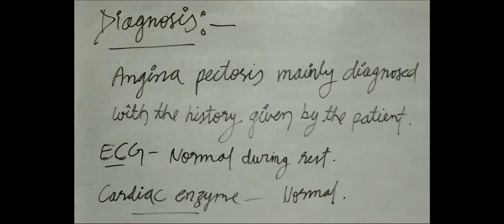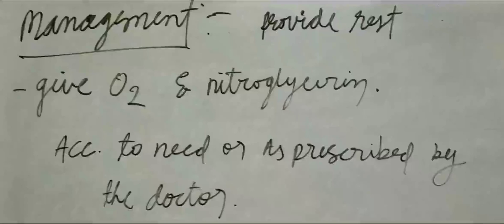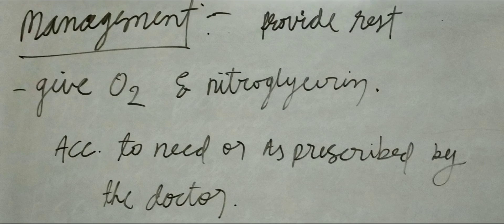Diagnosis: Angina Pectoris is mainly diagnosed with the history given by the patient, ECG which is normal during rest, and cardiac enzyme levels which are normal. Management of Angina Pectoris: Provide rest, give oxygen and nitroglycerin as needed and as prescribed by the doctor.